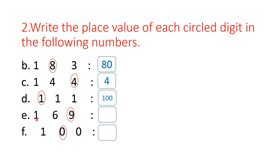Next one: the number is 9, which is in the 1's place, so the place value is 9 ones, which is 9. Next number: it is 100. The circled digit is 0. 0 is in the 10's place, so 0 tens — the place value is 0.